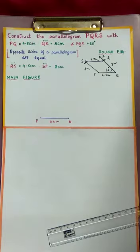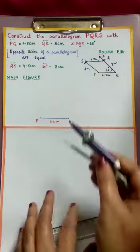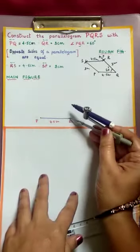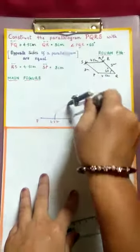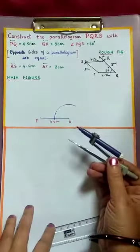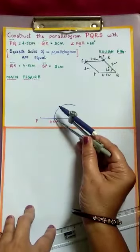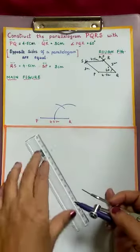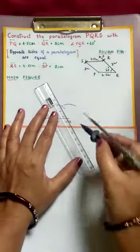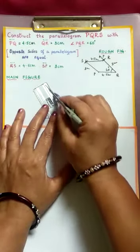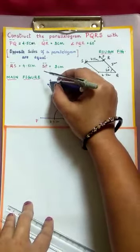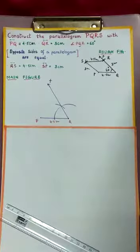Now, we have to construct a 60 degrees angle using compass. Place your needle end at Q, take some convenient radius, and draw an arc. Where this arc intersects the line segment, from there draw another arc. Join the intersecting point of the two arcs from Q. Name this ray as QX, which measures 60 degrees.